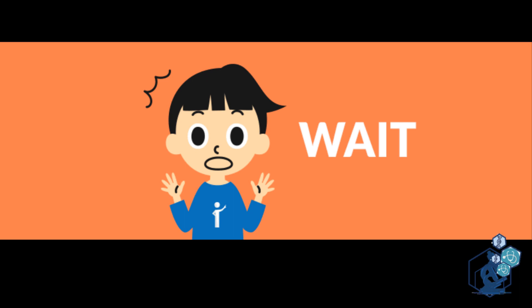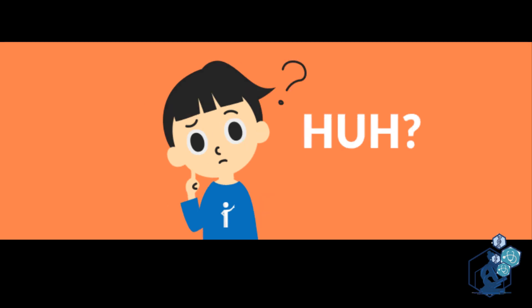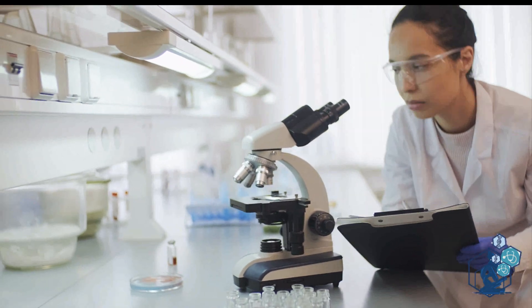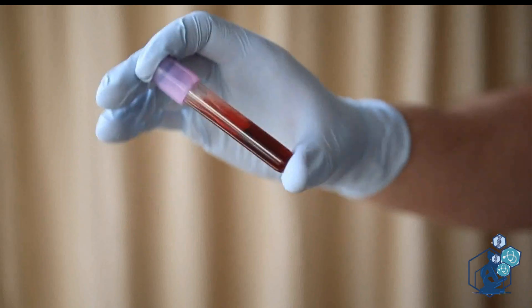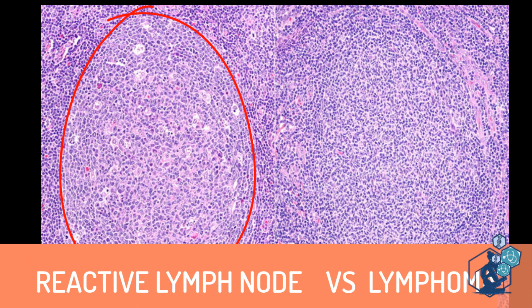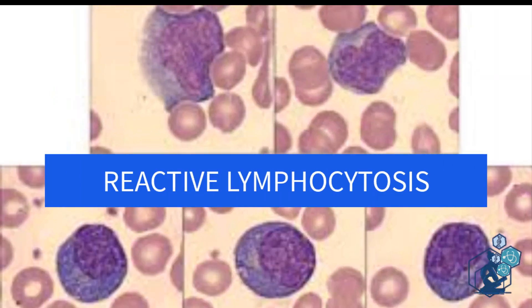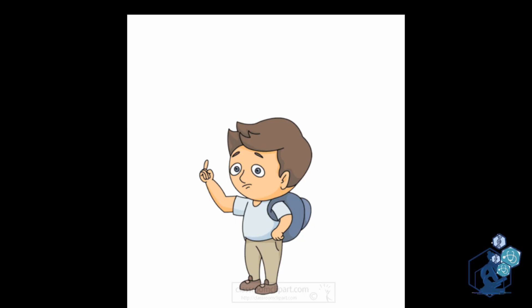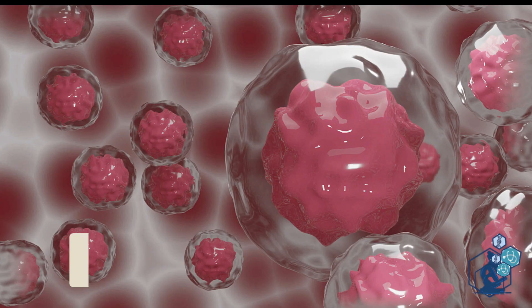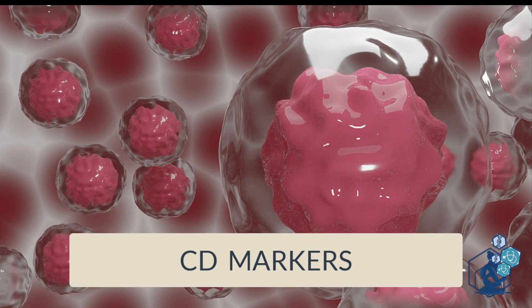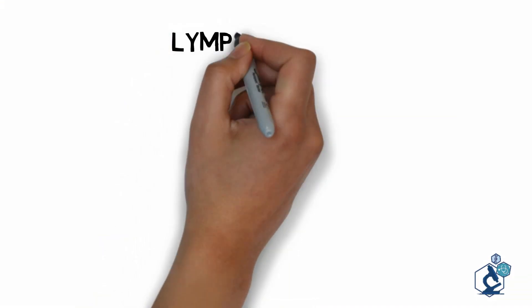Do we need to know T cell development? The answer is yes. Many times in flow cytometry, we get a sample from a lymph node or peripheral blood to be tested for presence of lymphoma or leukemia. However, a lymph node might have a reactive T cell proliferation due to infection, or peripheral blood lymphocytosis may be reactive. Knowing the CD markers present on T cell precursors and mature T cells helps us interpret flow cytometry plots and separate a benign T cell proliferation from a malignant one.